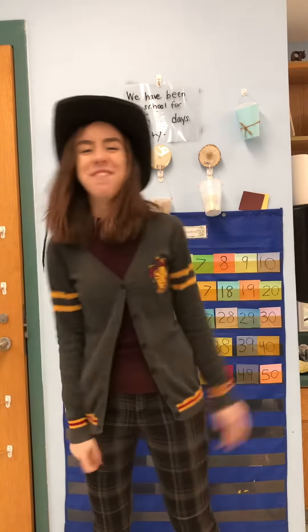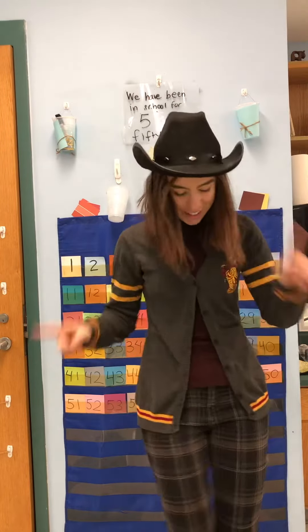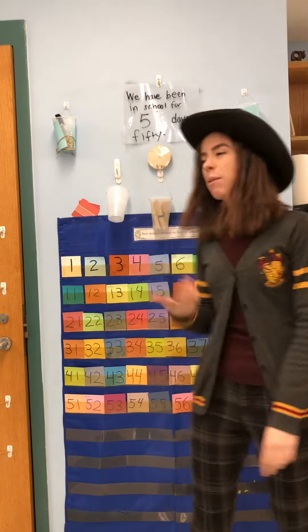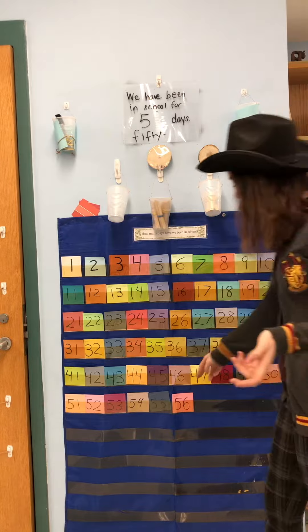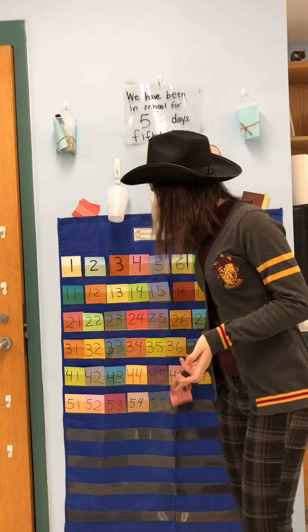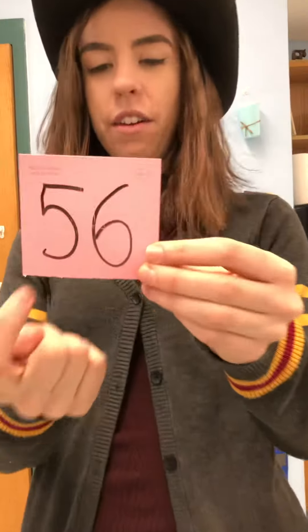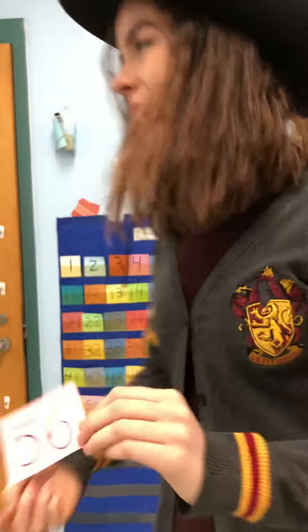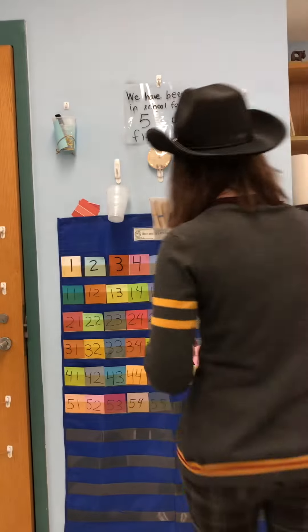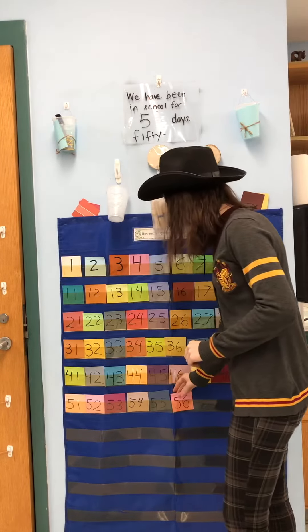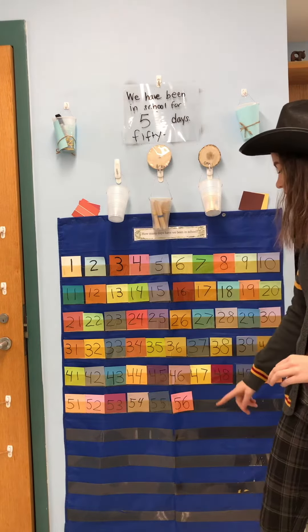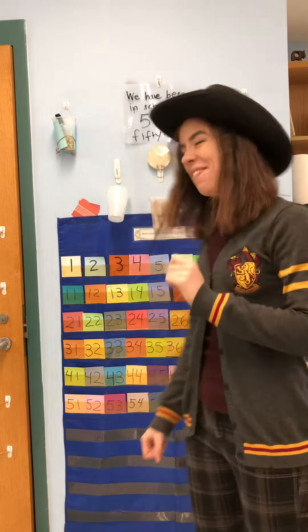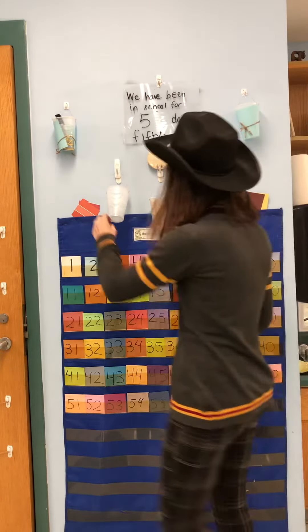Howdy partner! Slide holder here, ready to count. We want to know how many days we have been in school. The last time we counted we ended on 56. What could come next? 54, 55, 56... 57! You are right — after 56 comes 57.